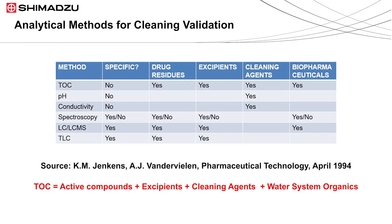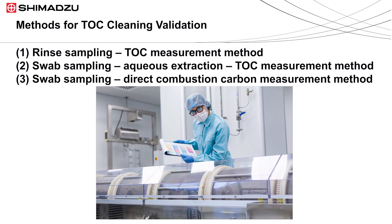TOC can be further broken down into three cleaning validation methods. The three methods include: first, the rinse sampling method, where rinse water is collected at the bottom of the vat and analyzed by TOC. Second, the swab sampling method with aqueous extraction, where a particular area of the vat is swabbed, the swab is inserted into a 40 ml vial of water, the organic material is extracted into the water, and later analyzed by TOC. Third, the swab sampling method with direct combustion, where the swab of a particular area of the vat is heated at a combustion temperature of 900 degrees C for analysis.